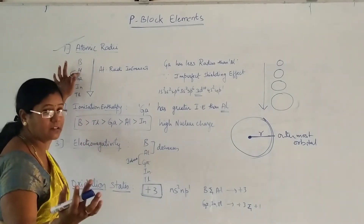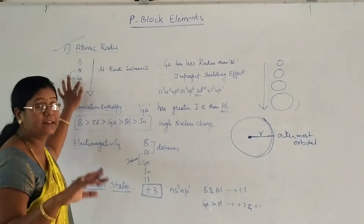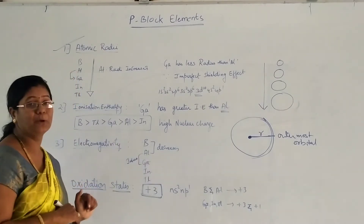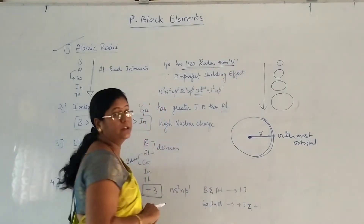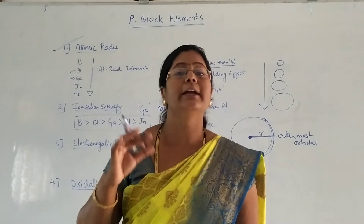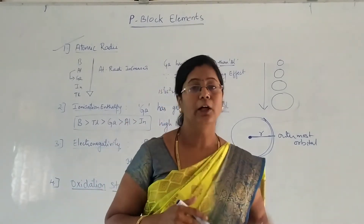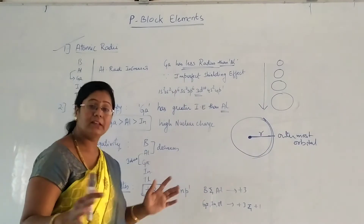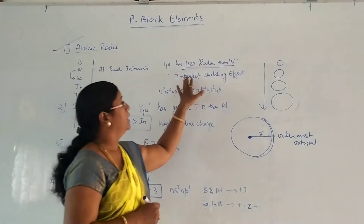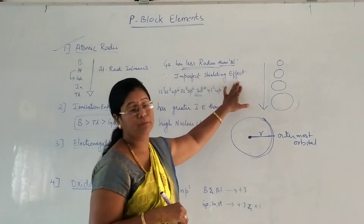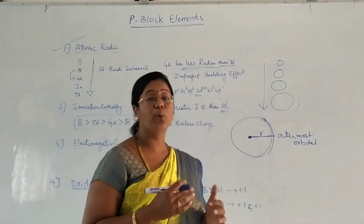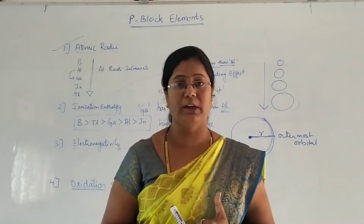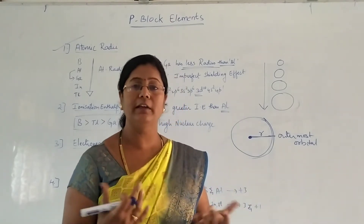The size of Gallium is less than the size of Aluminium. This is a deviation from the regular trend. This deviation is because of the imperfect shielding effect, also called the poor shielding effect. Due to this effect, the size of Gallium is smaller than the size of Aluminium.